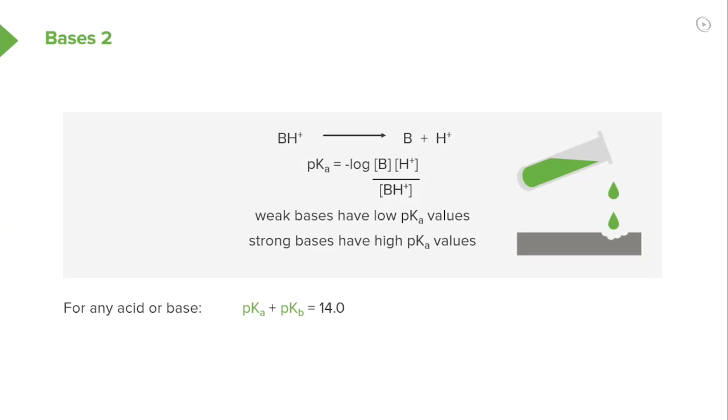This shows that BH+, which is our conjugate acid, dissociating to give us our free base and our H+, correlates actually to a dissociation or acidity constant pKa. The equation for this is shown on the board.